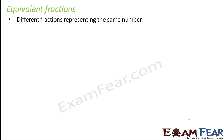Equivalent fractions. So what are equivalent fractions? These are different fractions representing the same number. For example, 9 by 3 and 21 by 7 are definitely two different fractions, but these two fractions are representing the same number, and that is why they are categorized as equivalent fractions.